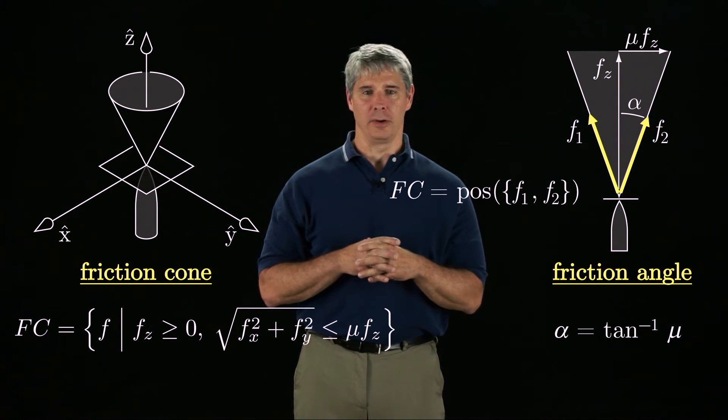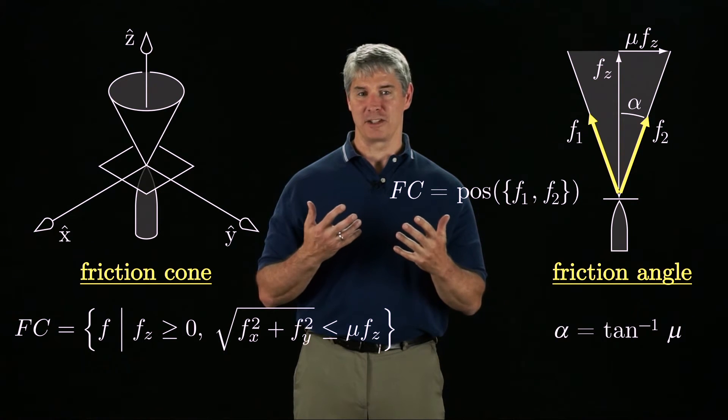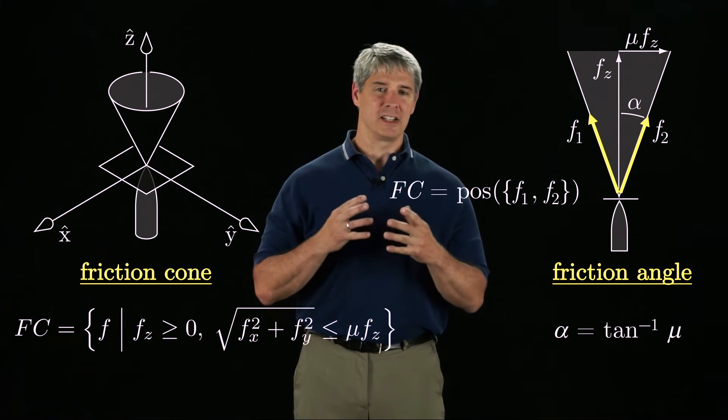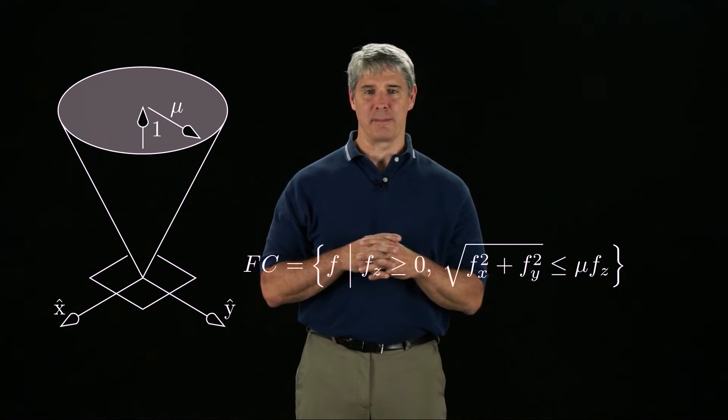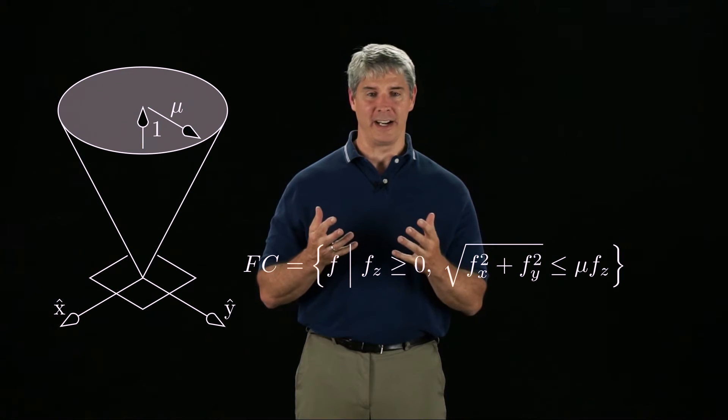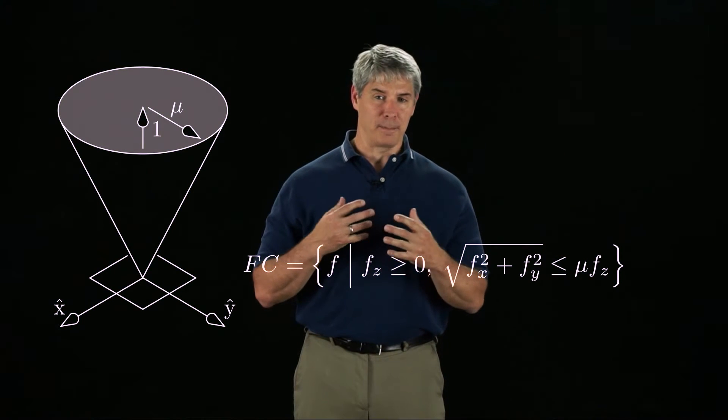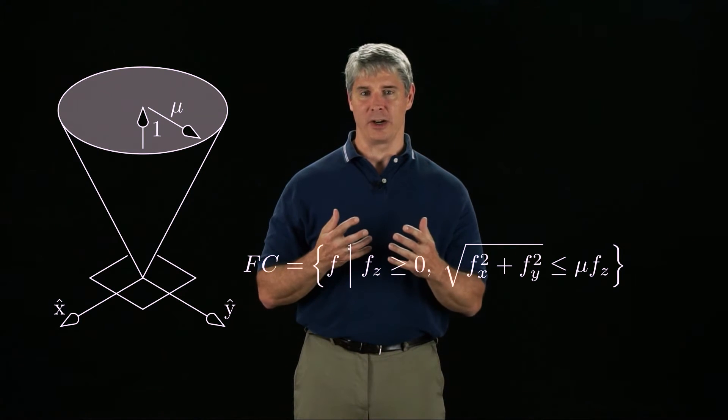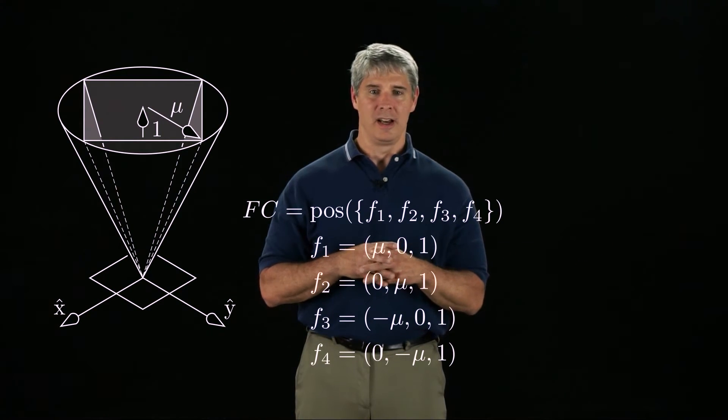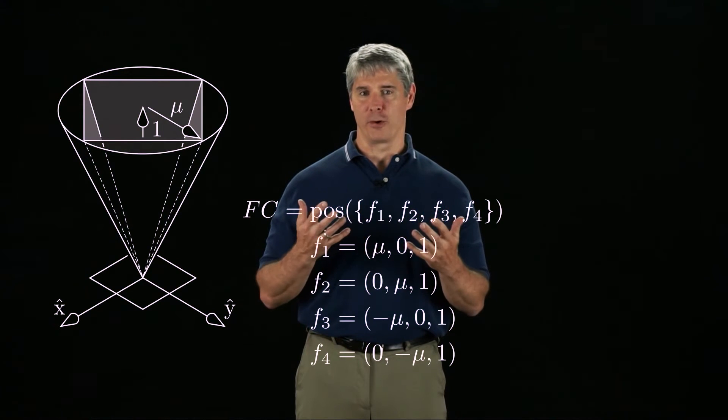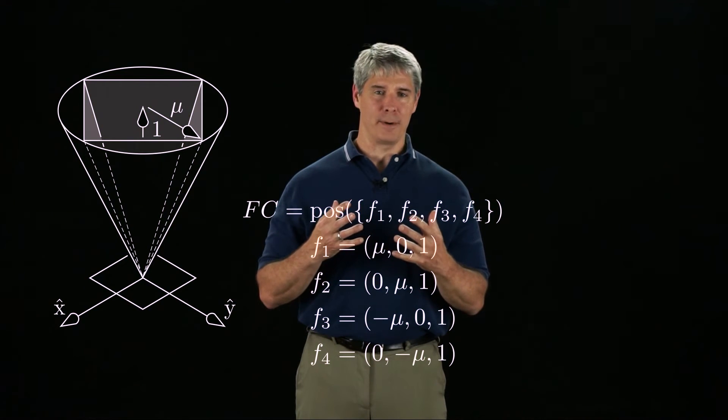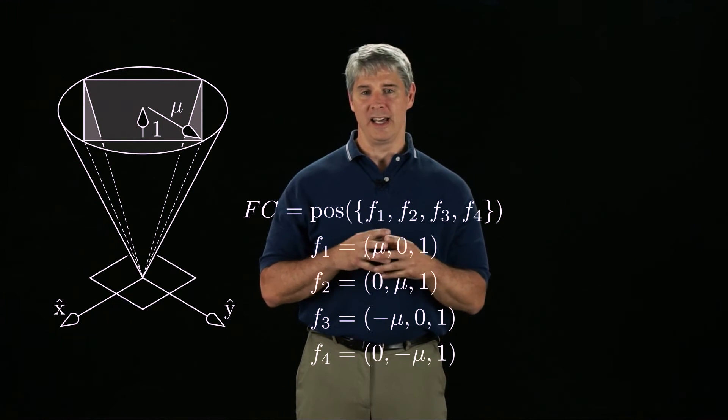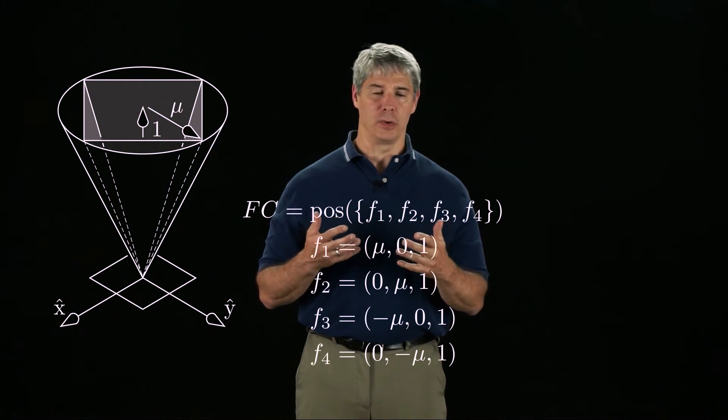Unlike a planar friction cone, which can be represented as the positive span of two forces, a spatial friction cone cannot be represented as the positive span of a finite number of forces. For computational purposes though, it's common to approximate a quadratic cone as a polyhedral cone, defined as the positive span of four forces, where the z component of each force is one and the x or y component is mu or minus mu.